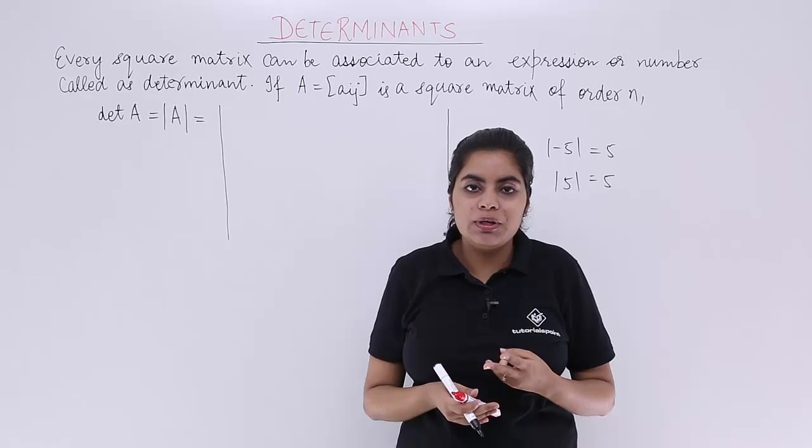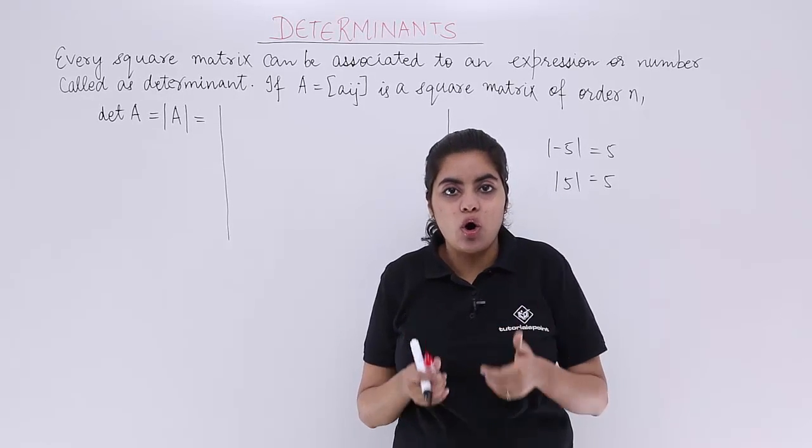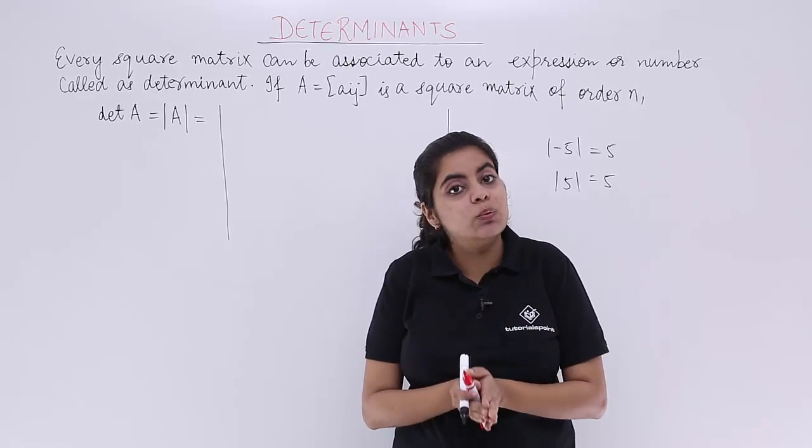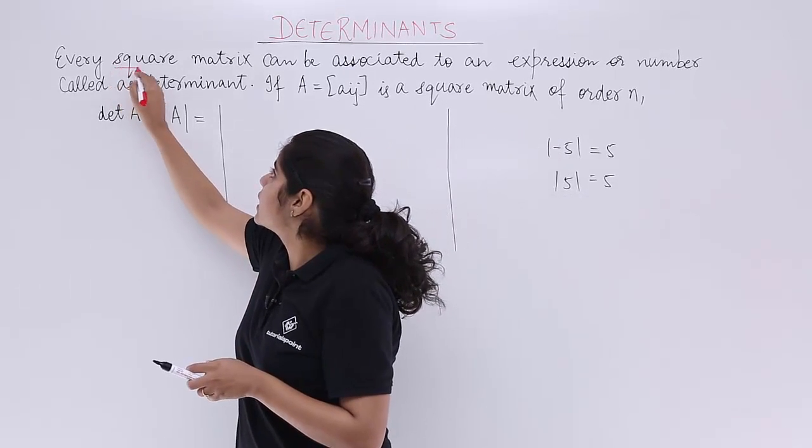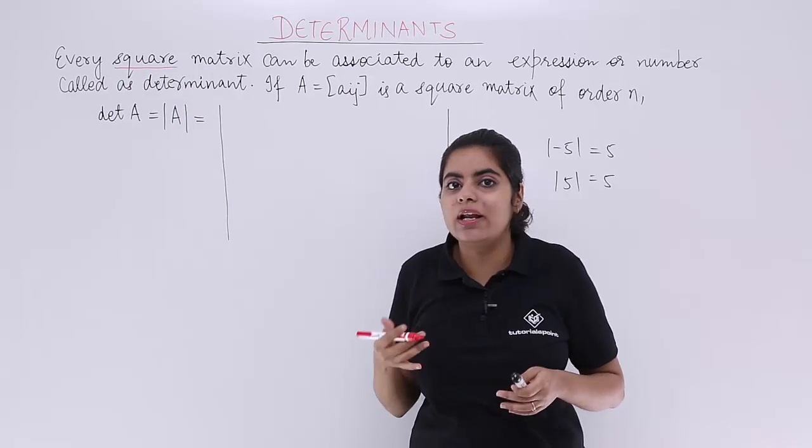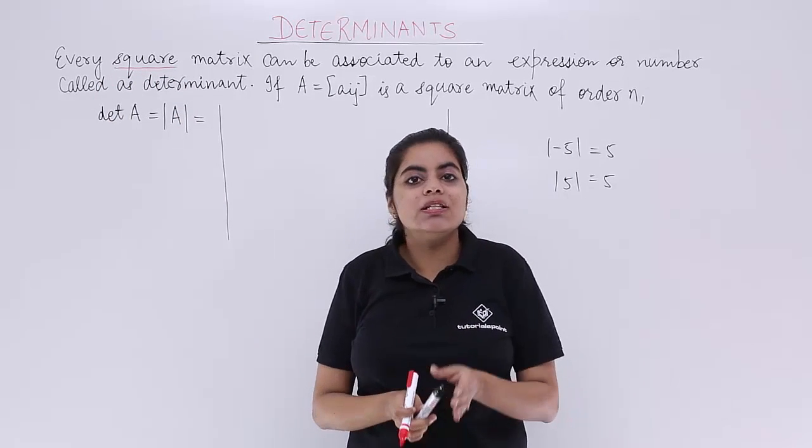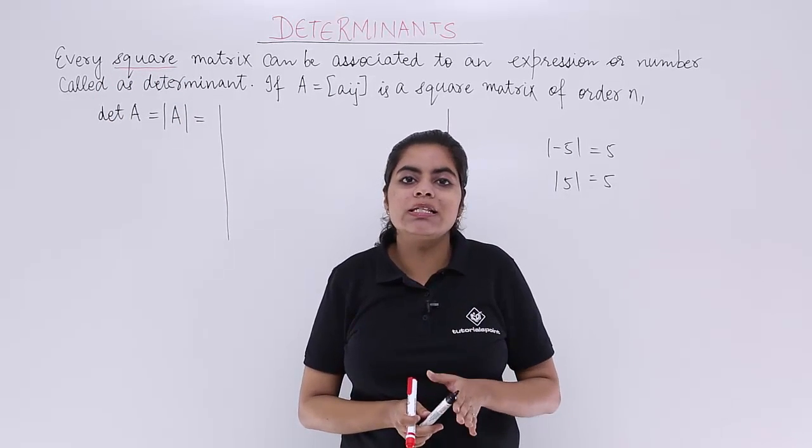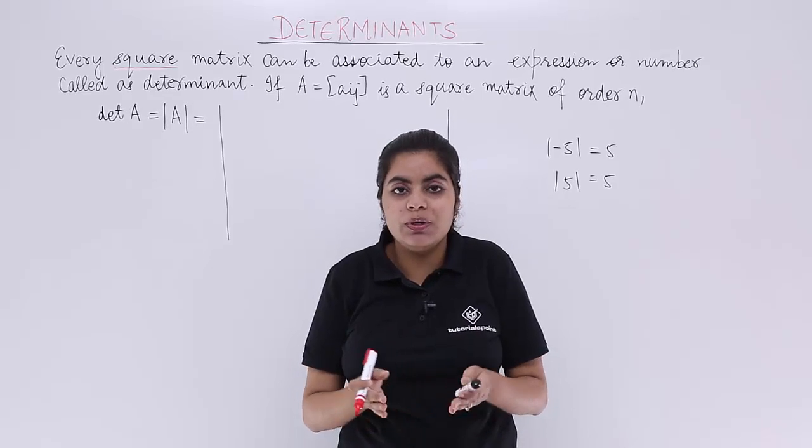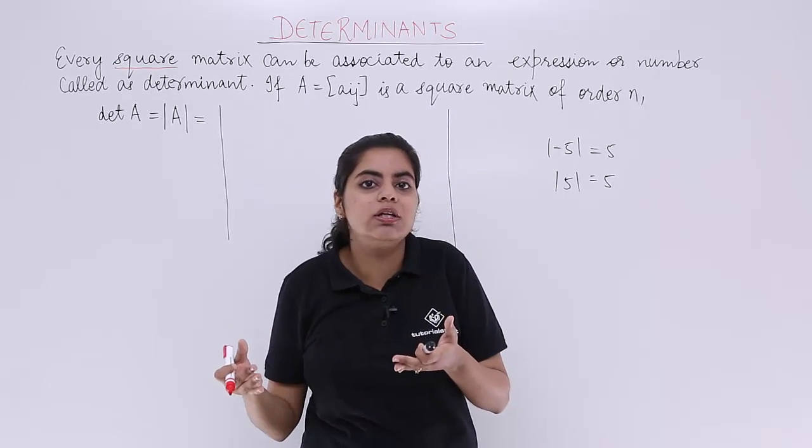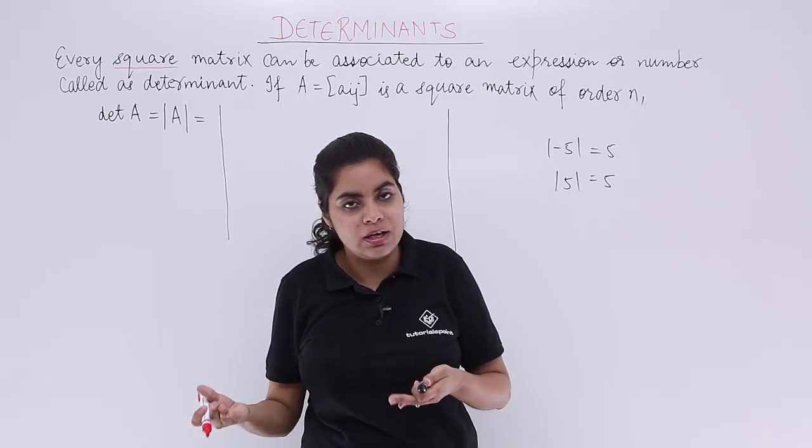The other important note is that determinants always are possible with square matrices. Remember, only and only determinants are possible with square matrices and not any other matrix. You will never have a matrix two by three order having a determinant value.